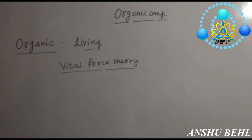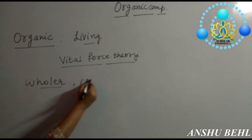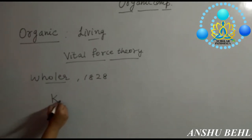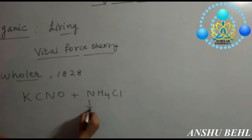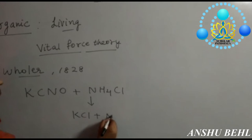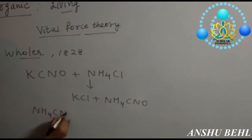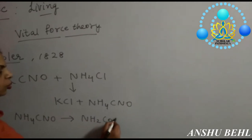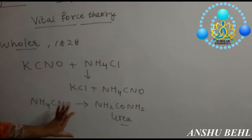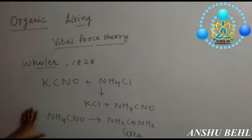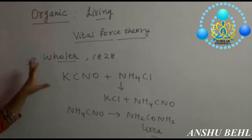That's why it was believed we can't prepare organic compounds in the lab. But after that, Wöhler was the scientist who, in 1828, was doing a reaction of potassium cyanate with ammonium chloride to make ammonium cyanate. But by chance, ammonium cyanate was overheated and it led to urea. Urea is a compound found in human waste, so a compound present in living beings was prepared in the lab.